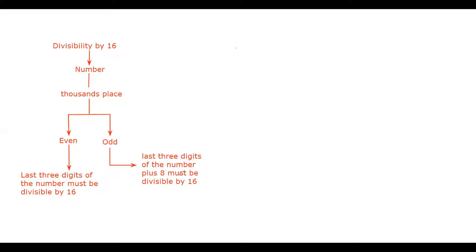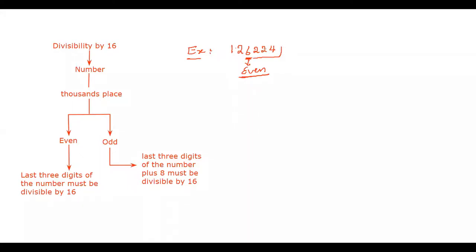Let me take an example. The first example is the number 126224. The digit in the 1000s place is 6. Since 6 is an even number, the rule we follow is: the last 3 digits of the number must be divisible by 16. The last 3 digits are 224.